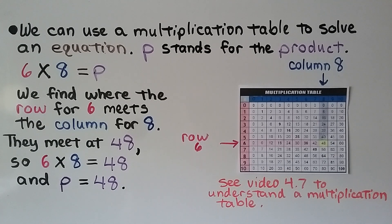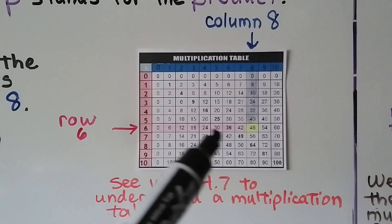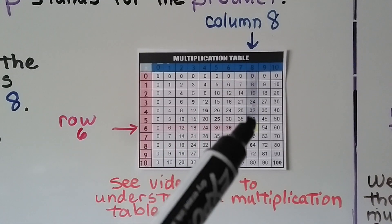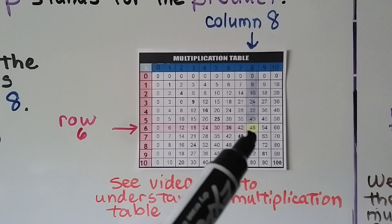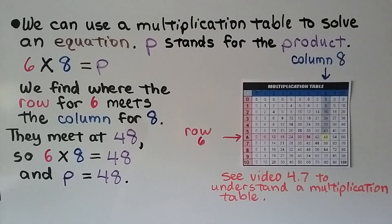Let's take a closer look. We see where the row for 6 meets the column for 8, and it meets at the square that has a 48 in it. So 6 times 8 is equal to 48. There's a link to video 4.7 to understand a multiplication table — that's where we first learned about them. So our variable p is equal to 48.